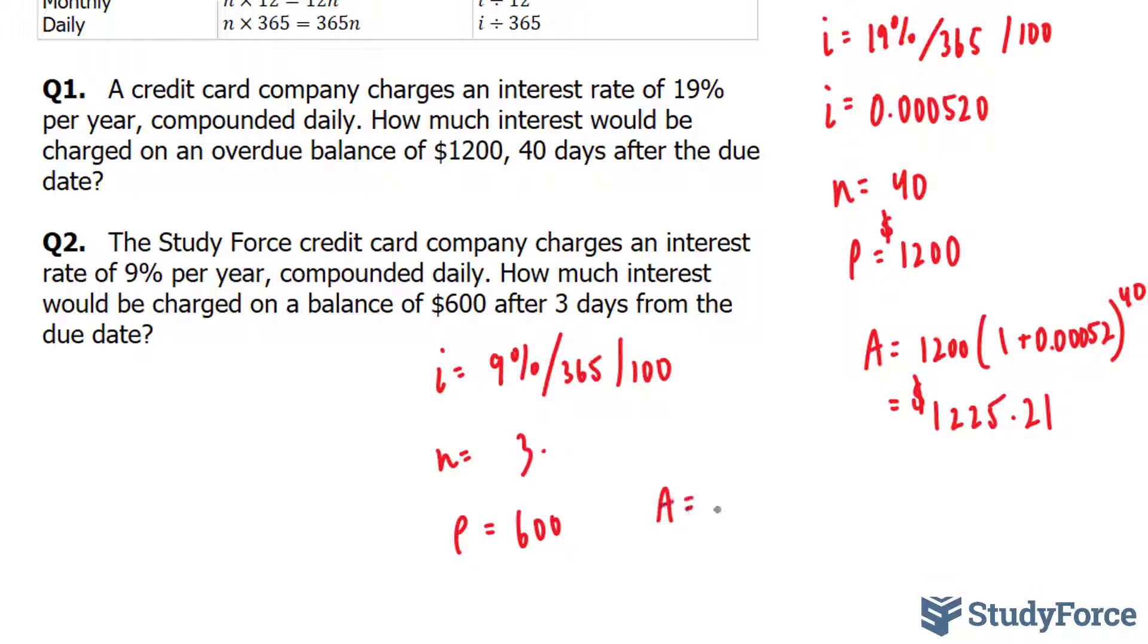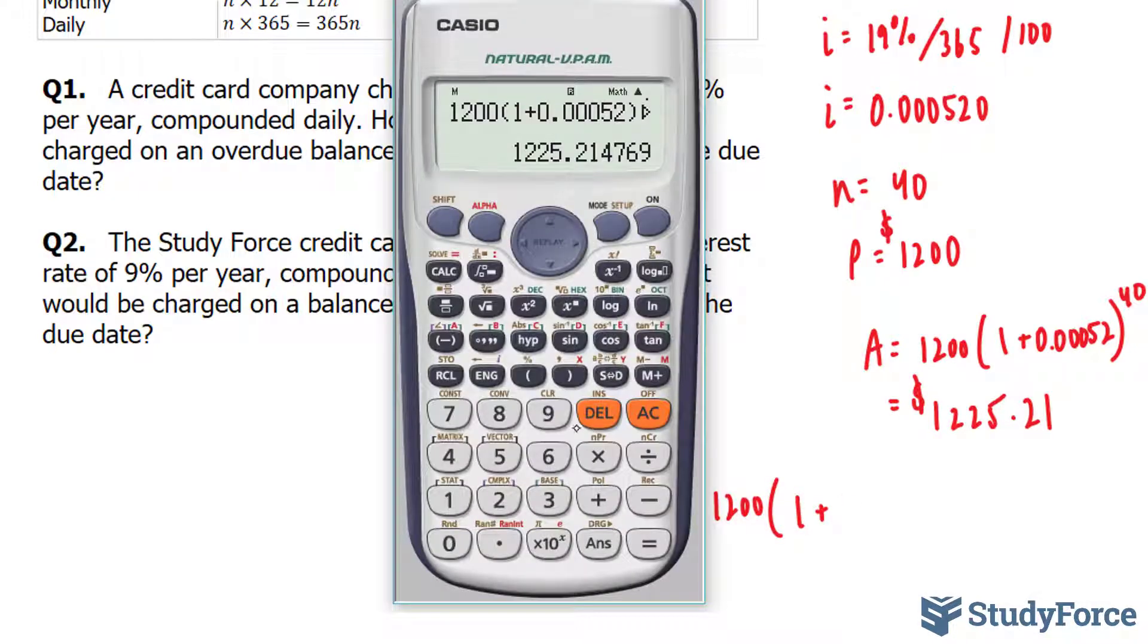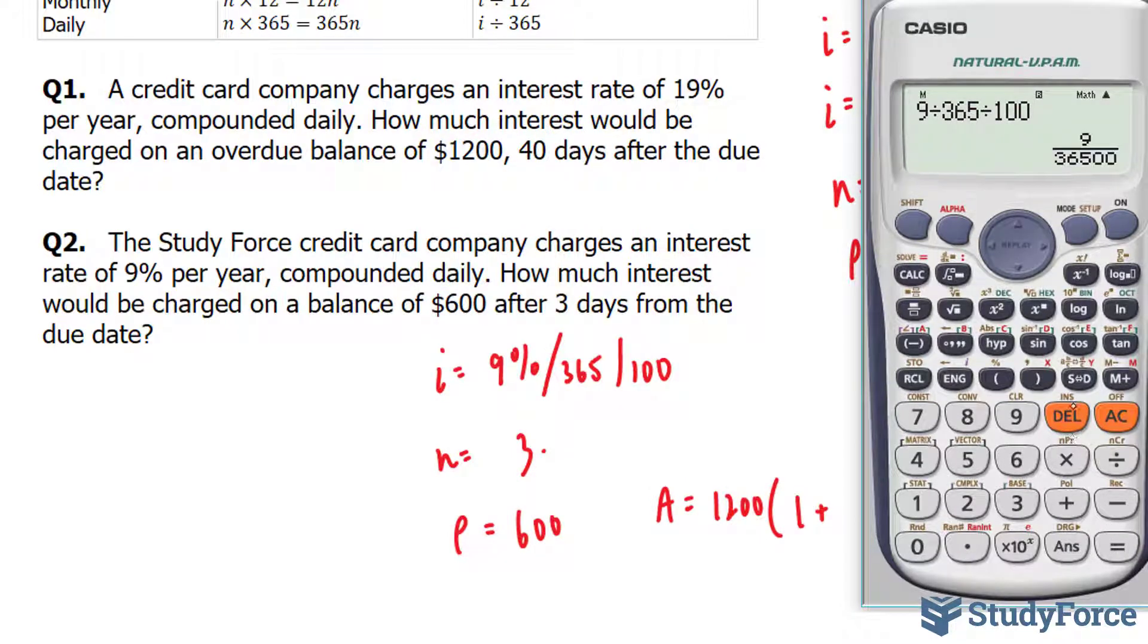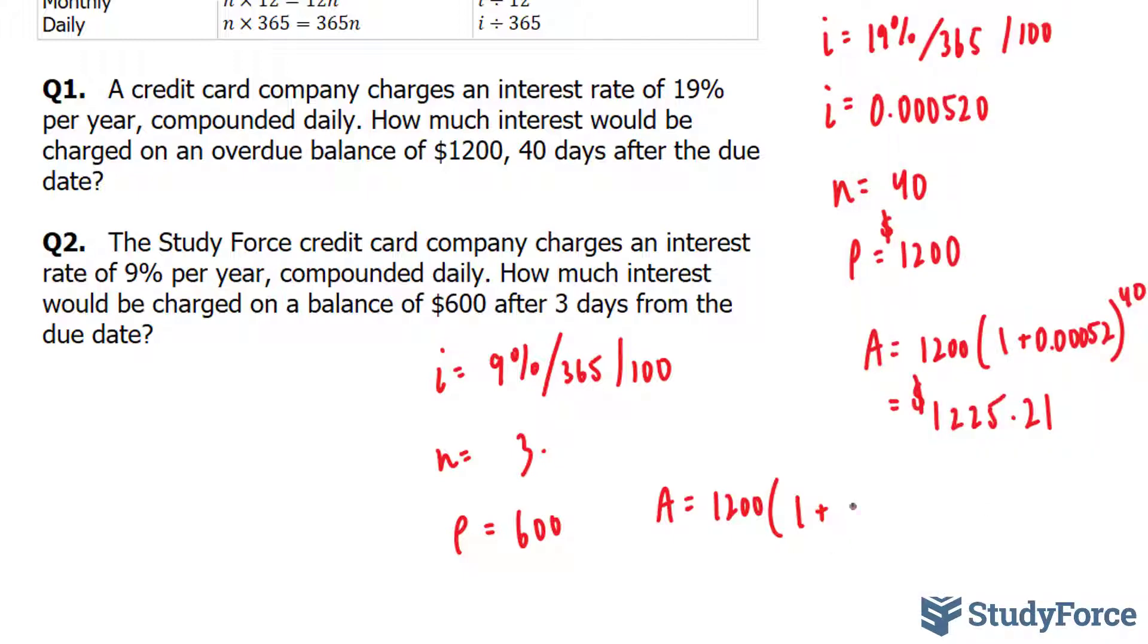So we have A is equal to 1,200 times 1 plus, let's find out what that is. 9 divided by 365 divided by 100 gives us 0.000246.